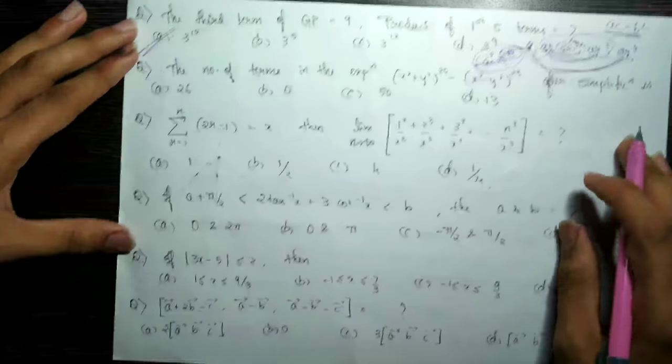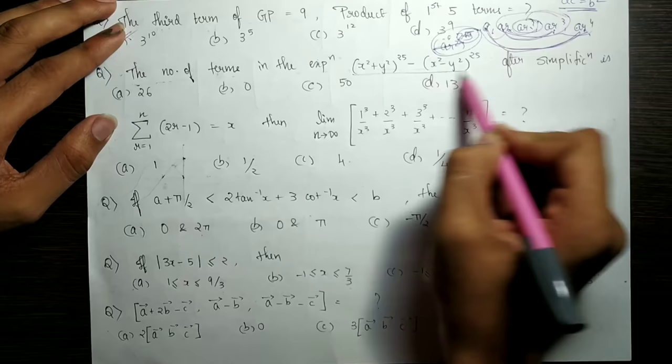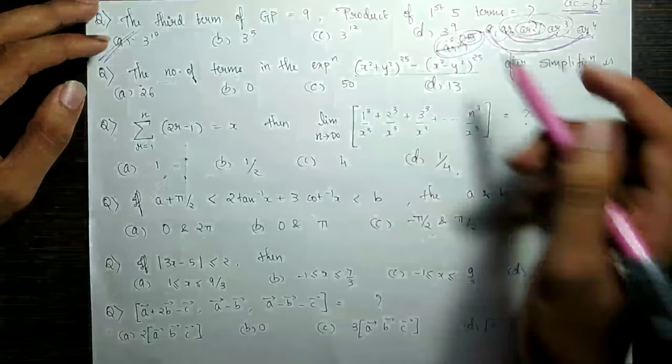Next question: the number of terms in the expansion. This question is from the 2017 paper — questions 17 and 18. This question is about question 47, about xy. The difference is plus 1 divided by 2. Option D is 13.